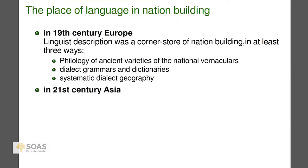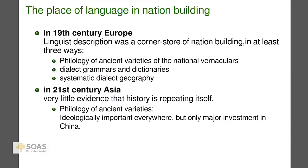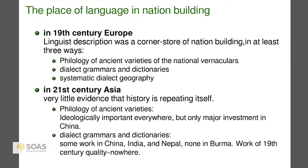For whatever reason, these elements of nationalism do not seem to be repeating themselves in Asia. Philology of ancient varieties — everyone pays lip service to it, but only in China do you see major investment in it. In India, as much as the BJP loves Sanskrit, you don't see people pouring over Sanskrit texts and doing editions of Sanskrit texts as a manifestation of Hindu nationalism. As for dialect grammars and dictionaries, there's a little bit of work here and there, but it really doesn't seem like the modern states of Asia feel the need to express their national identity through linguistic fieldwork.